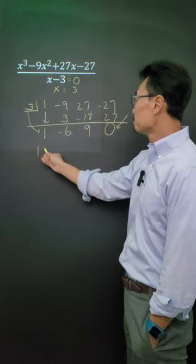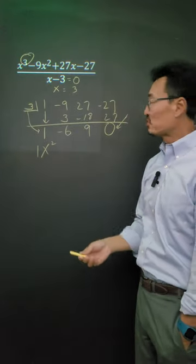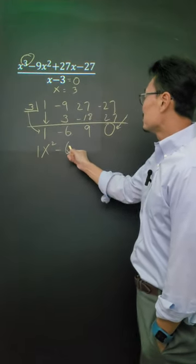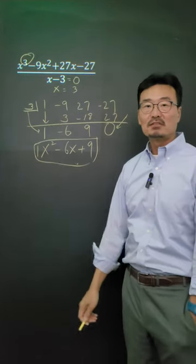How do we finish? We take that 1, put x squared. Notice it's 1 less than the degree that we started with. Minus 6x plus 9. That's the answer. There we go.